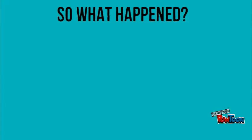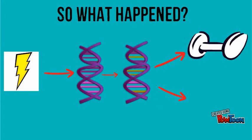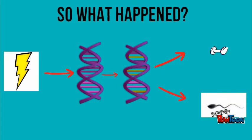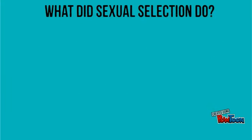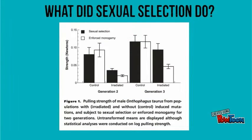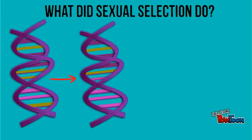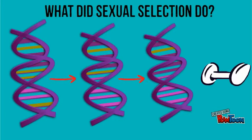As a result of ionizing radiation, mutations were induced in male dung beetles. These mutations caused decreased strength and testes size in the irradiated parental generation. Following two generations of sexual selection, the strength of males in populations with induced mutations was almost restored to that of males in the control populations, indicating that sexual selection was able to successfully purge many mutations affecting male strength.